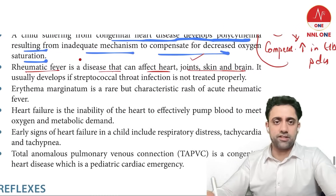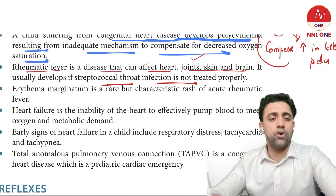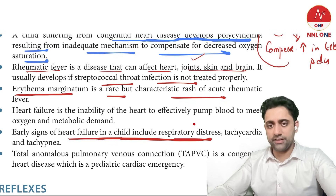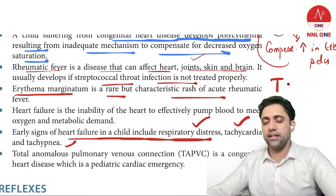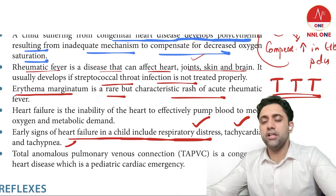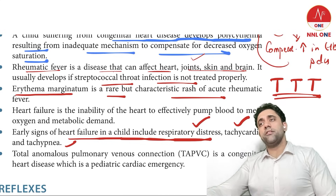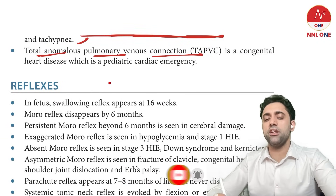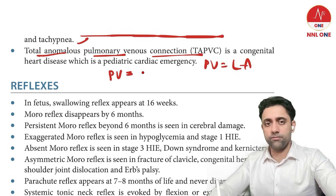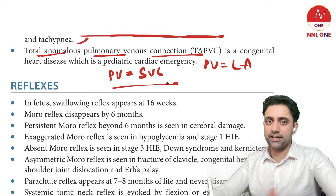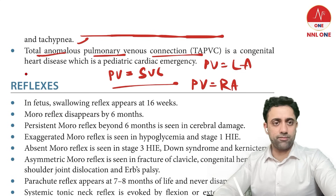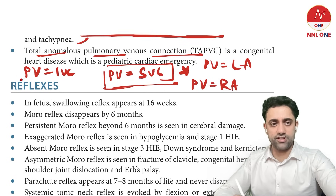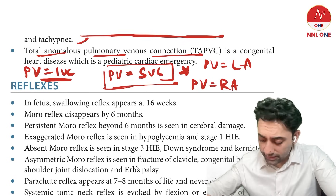Early signs of heart failure include respiratory distress, tachycardia, and tachypnea. The triad of congestive cardiac failure is tachycardia, tachypnea, and tender hepatomegaly. In total anomalous pulmonary venous connection (TAPVC): if pulmonary veins enter the superior vena cava it is supracardiac TAPVC; if they enter the right atrium it is cardiac TAPVC; if they enter the inferior vena cava it is infracardiac TAPVC. The most common type is supracardiac; the most obstructive is infracardiac TAPVC.